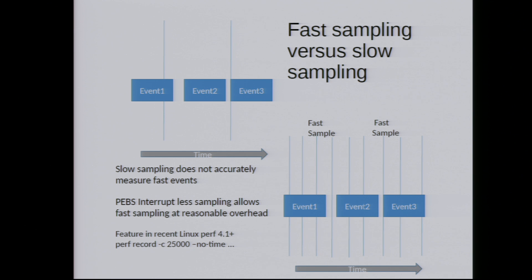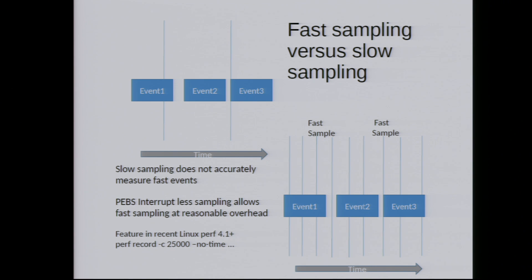One technique to address this is using PEBS without an interrupt: the CPU directly writes sampling information into a buffer. This way, we were able to get about 10 times higher sampling frequencies. The disadvantage is it doesn't work with call graphs, so you can't see what's calling the slow function. There are trade-offs. This feature was implemented in Linux kernel 4.1 with Linux perf — you set a fixed sampling frequency and disable the time option.